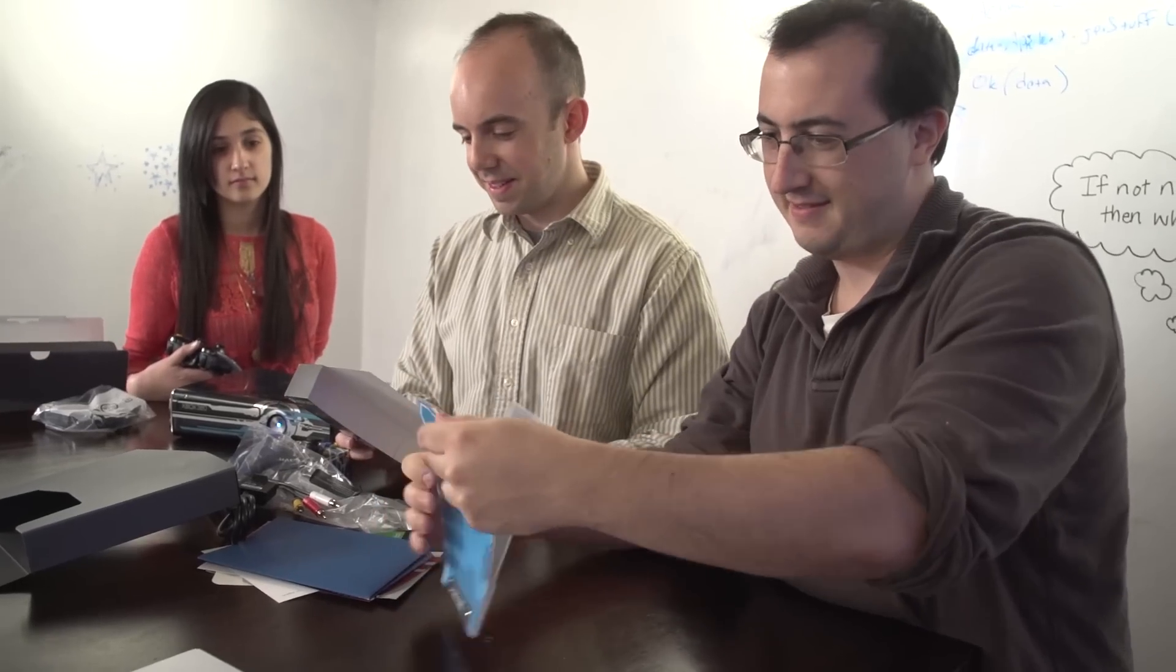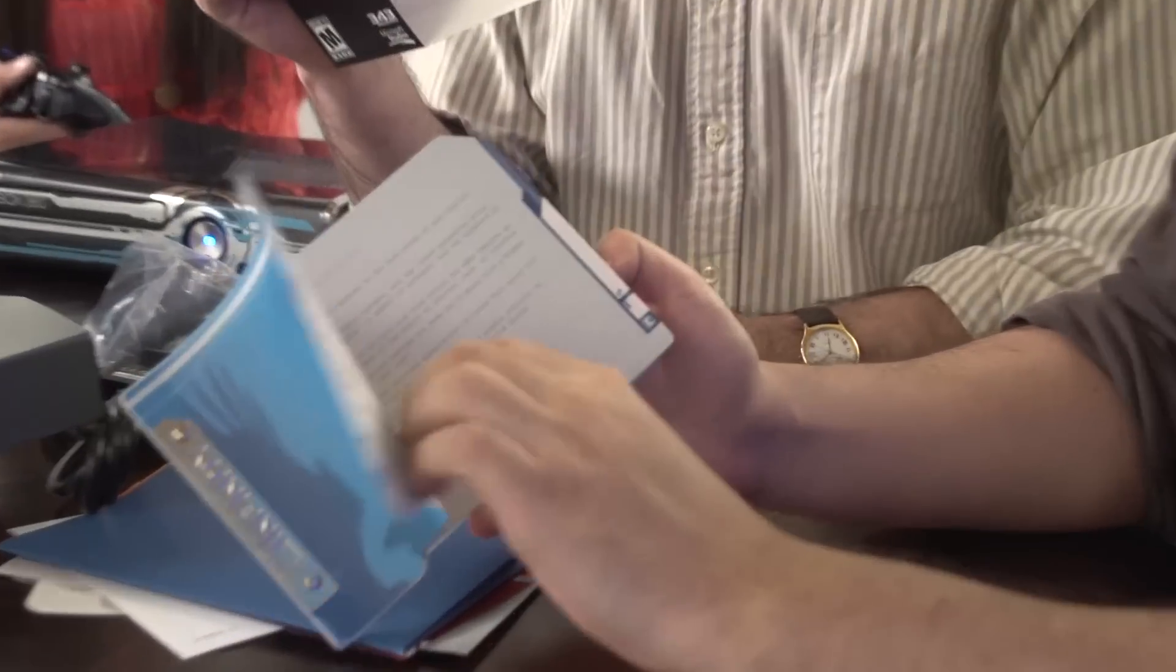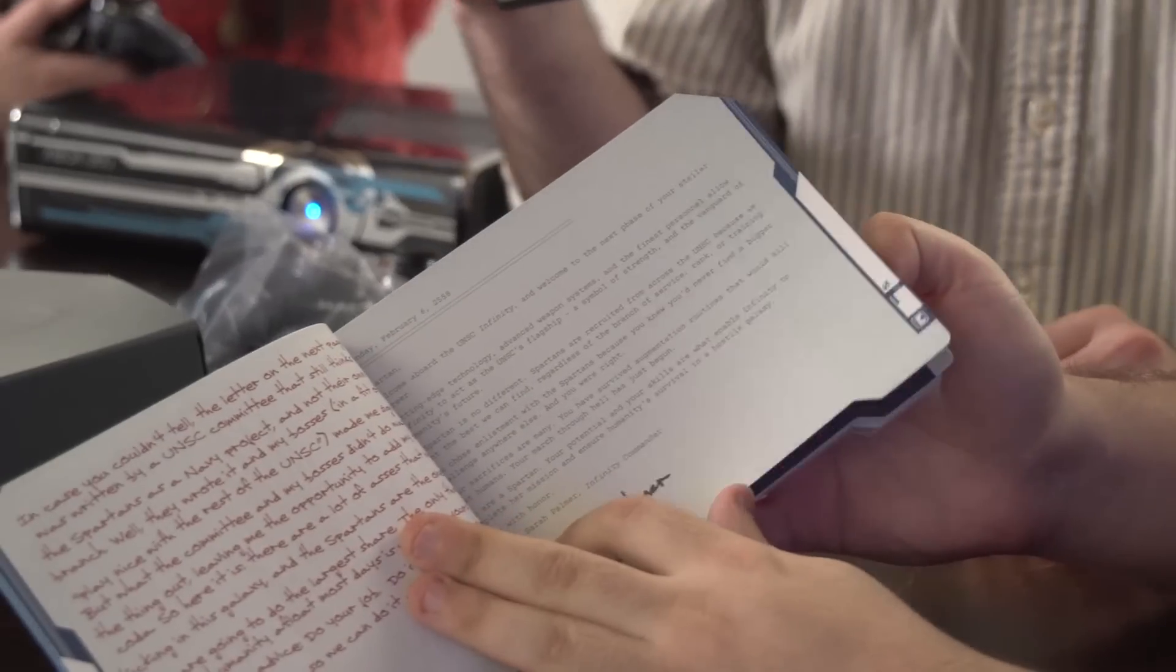And then here we have a diary. Is that what this is? No. Well, it's like an instruction manual and also a diary. What does it say in there? Something official? It's probably like a Spartan blog.